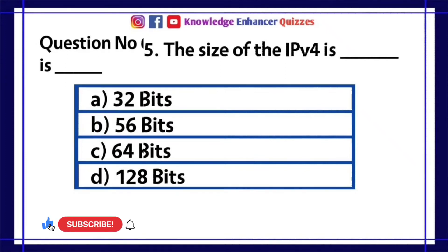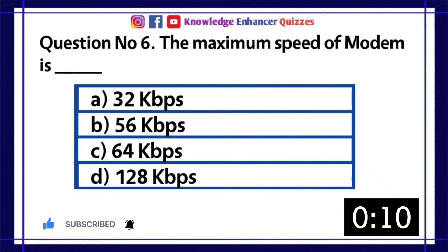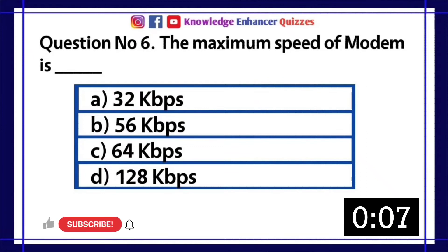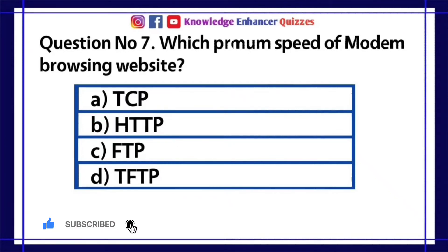Question number 6: The maximum speed of a modem is — A. 32 kilobits per second, B. 56 kilobits per second, C. 64 kilobits per second, D. 128 kilobits per second. Option B is the right answer.